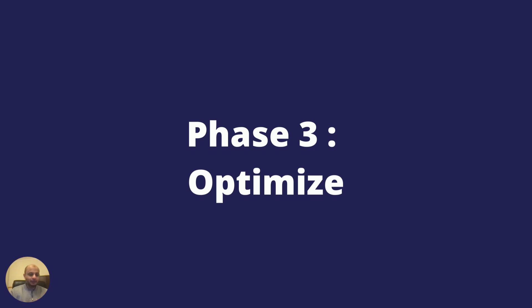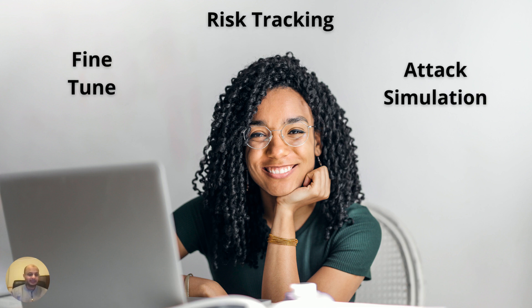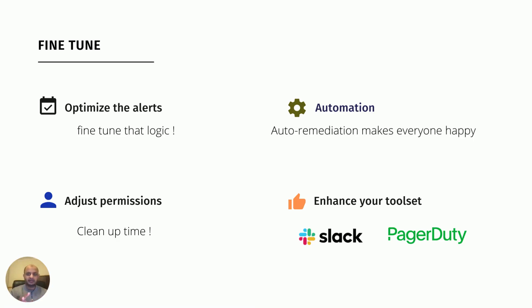Phase 3 is Optimizing — this is where you start to enjoy being on the cloud and see the real power of it. Security teams gain confidence in their cloud controls and can shift focus to more strategic work. Key activities here include fine-tuning: now that you know which alerts are generic, you can turn on auto-remediation so security teams can focus on more productive work. Optimize your alert logic, and clean up cloud permissions that were granted broadly in earlier phases — by now you know what's needed and can fine-tune accordingly.